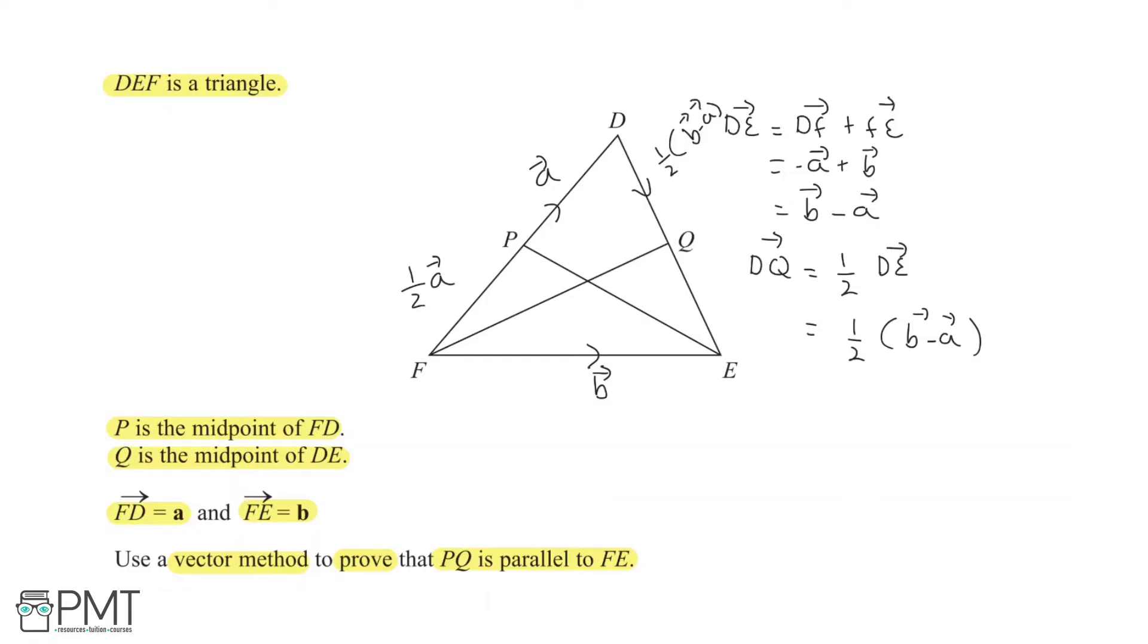So that's all good. But from here, we can find PQ, because PQ is this sort of imaginary line. Now, to find PQ, what we're going to say is the vector PQ equals, well, we can go from P to D, so vector PD.